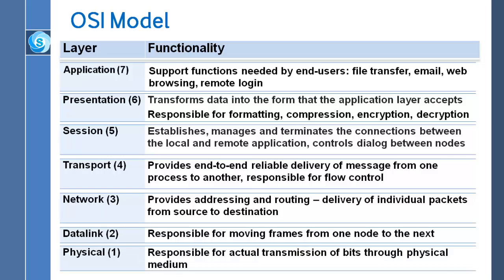Layer 2, or the data link layer, is responsible for moving frames from one node to the next. Packets in layer 2 are called frames. Finally, layer 1 is the physical layer, which is responsible for the actual transmission of bits through wires, cables, or wireless media. It describes the physical characteristics of media and electrical and physical specifications of the devices, and coordinates the functions required to transmit a bit stream over a physical medium.